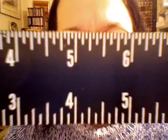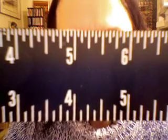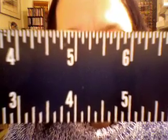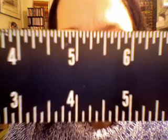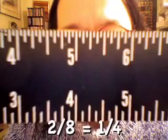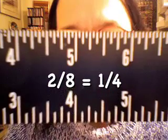Then the next division is quarter inches. And again, if you think about fractions and how they work, if you have 2 eighths and you reduce that, you get 1 fourth. So 2 eighths equals 1 fourth.